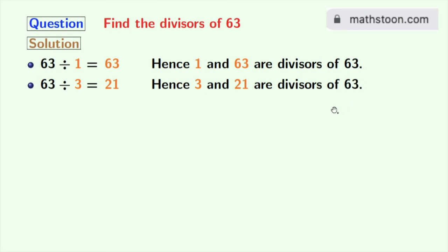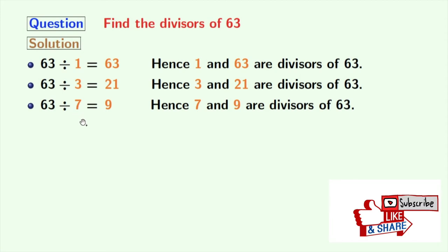Next numbers 4, 5, and 6 do not divide 63. So we will try for 7 and see that 63 divided by 7 is 9. Hence 7 and 9 are the divisors of 63.